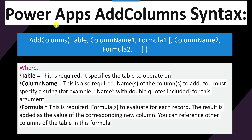Here you can see the syntax of the PowerApps addColumns function: addColumns(table, columnName1, formula1, columnName2, ...). The table parameter is required — it specifies the table to operate on. columnName is also required, and you must specify it as a string with double quotes. The formula parameter is also required and is evaluated for each record.